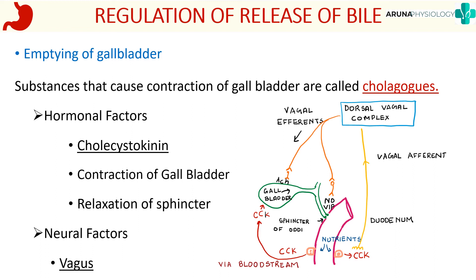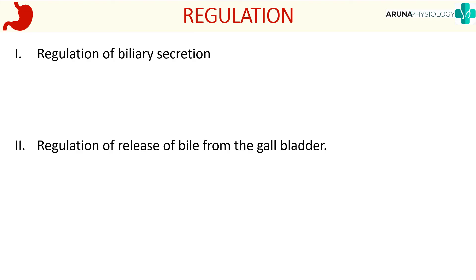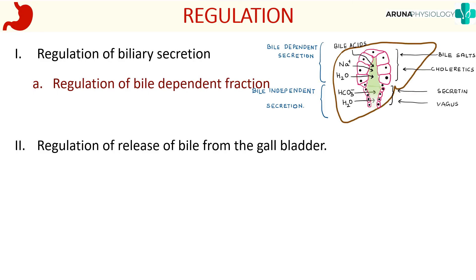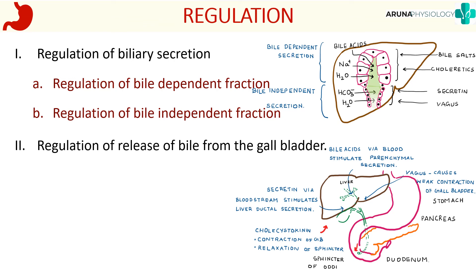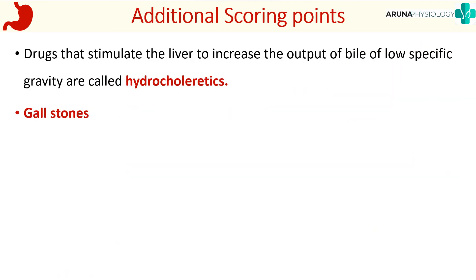That completes regulation of release of bile, covering both filling and emptying. To summarize: write about regulation of biliary secretion (bile dependent and bile independent fractions with a diagram), then regulation of release of bile from the gallbladder (CCK, vagus, mechanism diagram). For additional scoring points, mention hydrochlorotics — drugs that stimulate the liver to increase bile output of lower specific gravity, increasing the water content of bile. You can also mention how gallstones are produced.